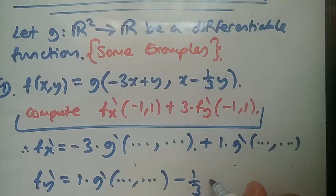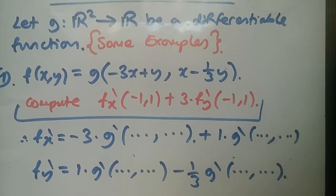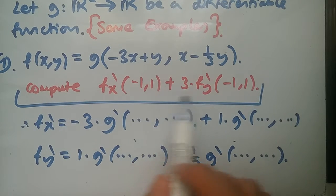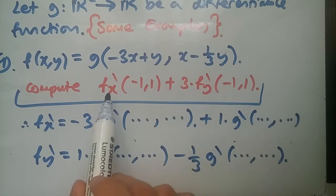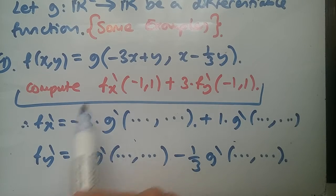Now we do the same thing with respect to y. Taking the derivative of the first part, since this is a constant, it would just be 1, so 1 times g prime dot dot dot. Plus taking the derivative of this part.